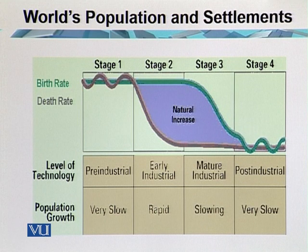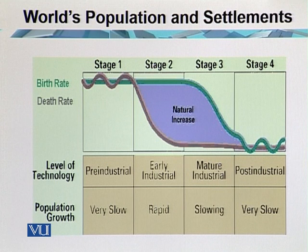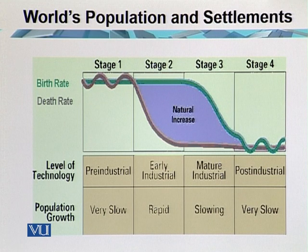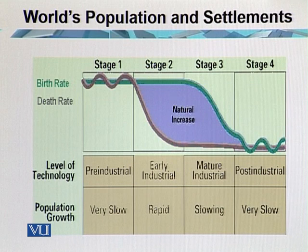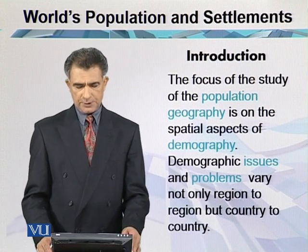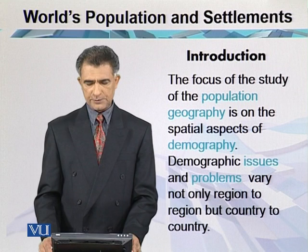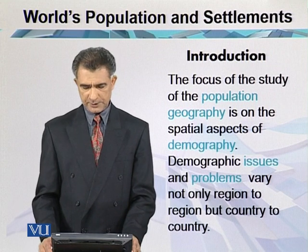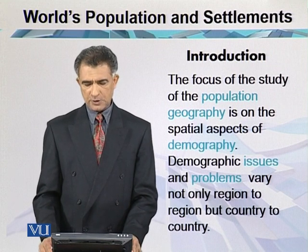Why has growth slowed? Because education has played an important role in reducing the birth rate. So the focus of the study of geography is on the spatial aspect of demography. Demographic issues and problems vary not only region to region but country to country. Demography covers the main characteristics of the population.